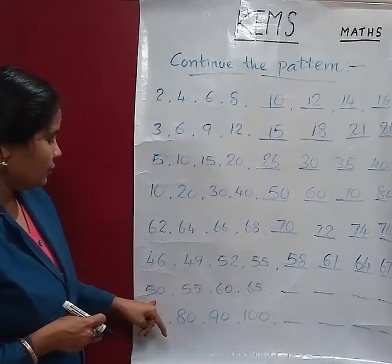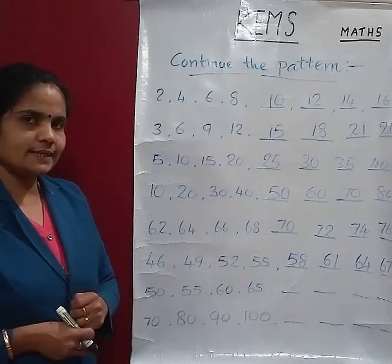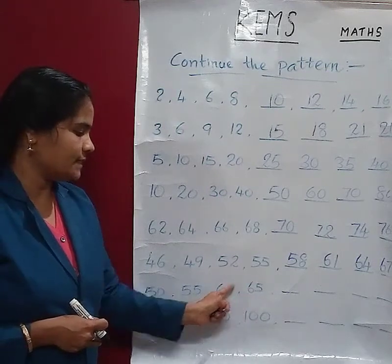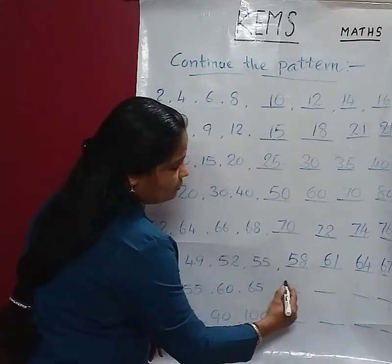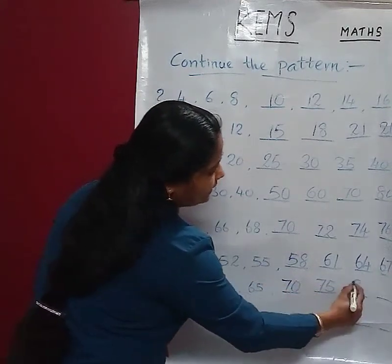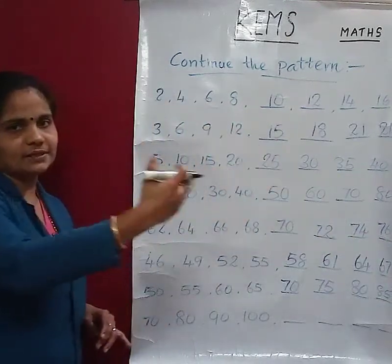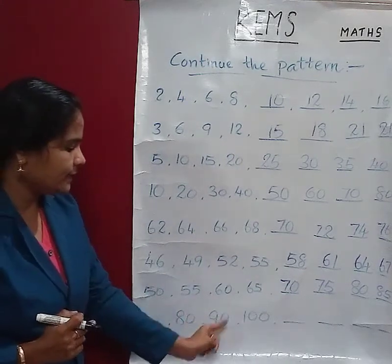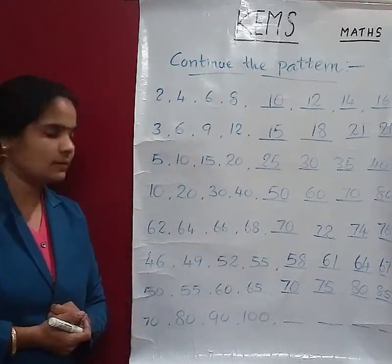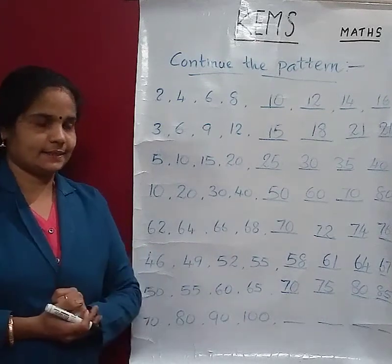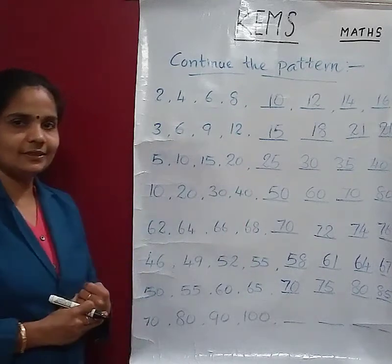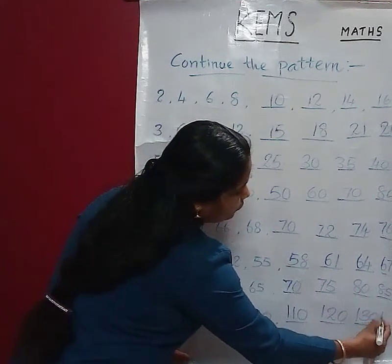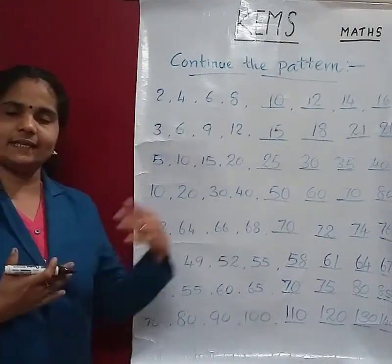The next: 50, 55, 60, 65 — can you guess the next numbers? Yes, these are 5s. So 65, 70, 75, 80, 85, then 90, 95, 100, and go on. The next: 70, 80, 90, 100 — these are 10s, so 100 plus 10 is 110, then 120, 130, 140, 150, 160, and so on.